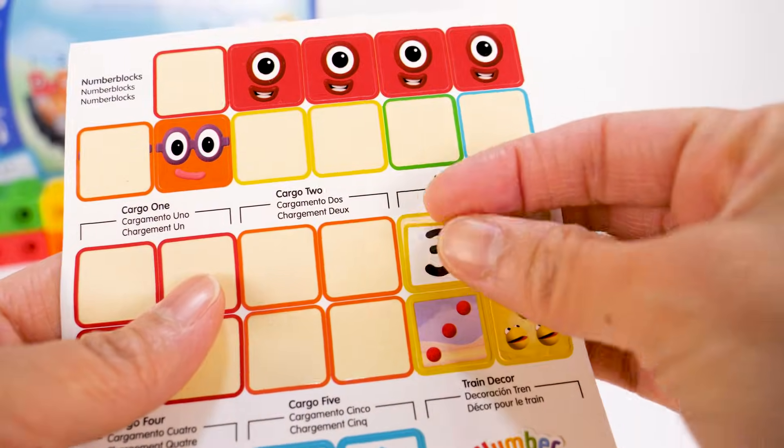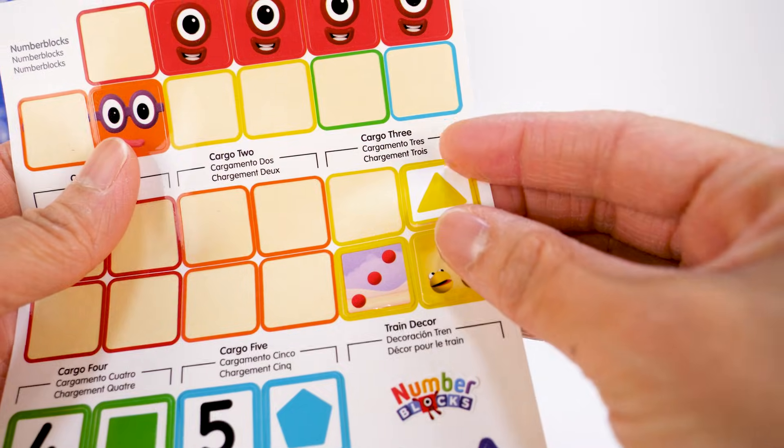For cargo 3, a sticker with number 3 and a yellow triangle.